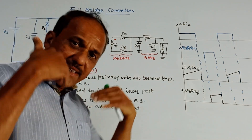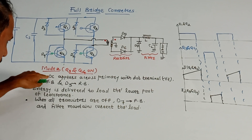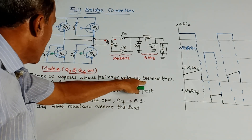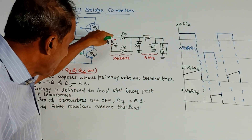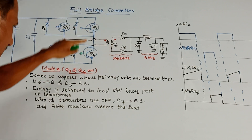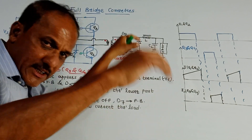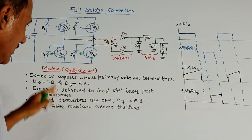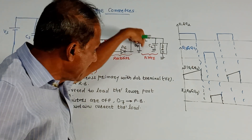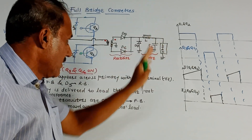In Mode 2, Q3 and Q4 are switched on, so the entire DC appears across the primary with the dot terminal now negative. This forward biases D6 and reverse biases D5. Energy is now delivered to the load through the lower part of the transformer. When all transistors are switched off, freewheeling diode D7 becomes forward biased, and current continues to flow to the load through the LC filter formed by inductor L and capacitor C2.